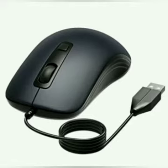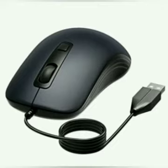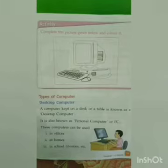Now here comes the picture of a computer mouse. Children, why do we call it a mouse? Because it looks like a real mouse with a long tail! The mouse is used to move a cursor around the screen. It is also used to point or select any object on the screen. Do you know what sound a mouse makes? It makes a click sound.